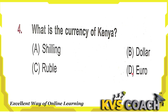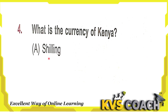Next question: what is the currency of Kenya? The currency of Kenya is Shilling, option A. Option B is Dollar — Dollar is the currency of United States. Option C is Ruble — Ruble is the currency of Russia. Option D is Euro — Euro is the currency of Monaco, San Marino, or Vatican City. So the right answer is option A: currency of Kenya is Shilling.